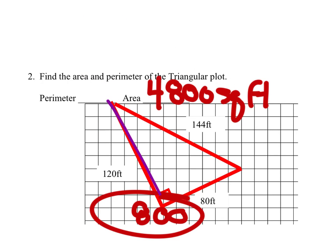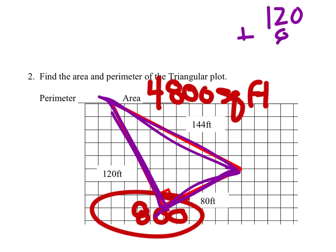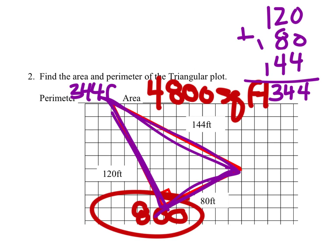Now the perimeter. So we're just going to add all the lengths together on the outside of the shape. So we got 120 plus 80 plus, oh man, plus 144. So we get a 4, 14, 1 plus 1 plus 1, 344 feet.